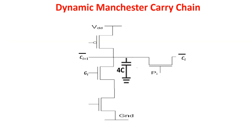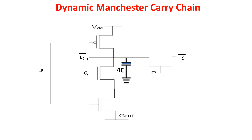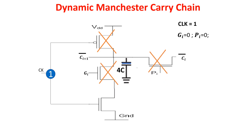Now let's see the dynamic Manchester Carry Chain. The basic cell is the same, but we connect two transistors to the clock. In dynamic mode, there are two phases per clock period. The first phase is dedicated to pre-charge, and the second to process the data. In the pre-charge phase the clock is zero: the output is connected with the supply voltage through the PMOS transistor, and the NMOS is disconnected. The inputs GI and PI are at high impedance, so no data is processed during the low period of the clock. The output capacitor is charged to VDD, showing a logic 1.